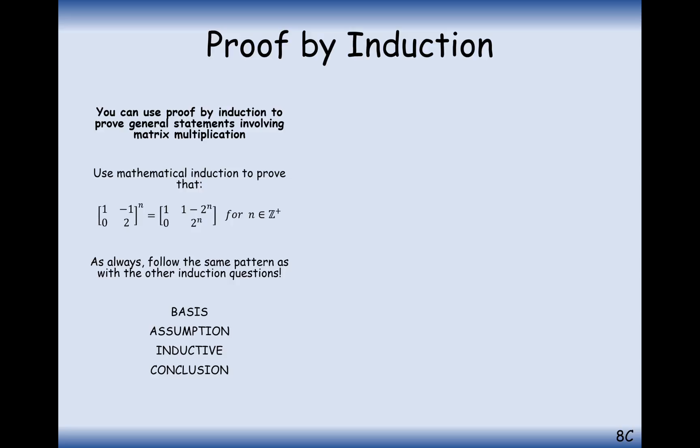If you haven't seen the video already, please do go ahead and have a look at it. We've got two examples to go through and then one question at the end. We've got the matrix (1, -1; 0, 2) to the power of n, which is equal to (1, 1 minus 2^n; 0, 2^n) for all positive integers n.